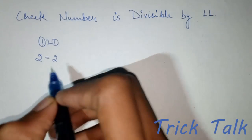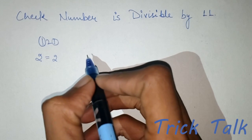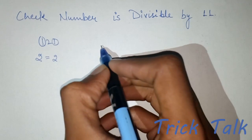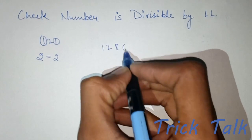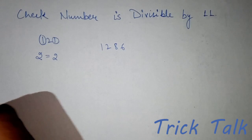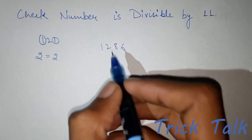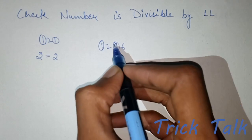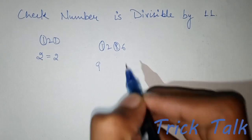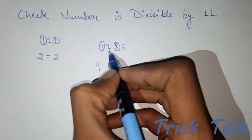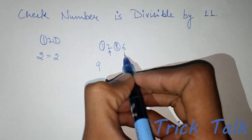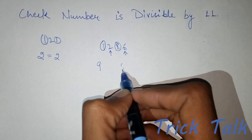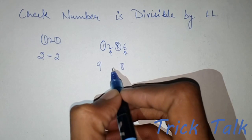You can also check it by calculator. Let's take another example: 1286. Check whether it is divisible by 11 or not. First add the first and the alternate digit — that is 1 plus 8 is 9. Now add the other pair of alternate digits: 2 plus 6 is 8. These both digits are not equal.